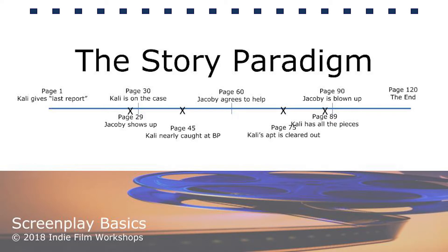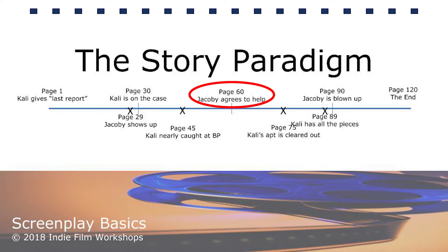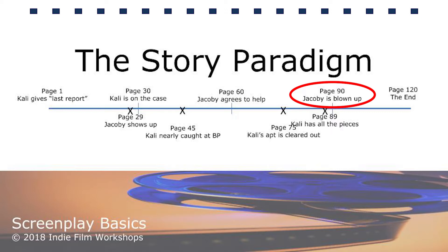What you're looking at right here in this slide is a story paradigm that I created for an actual screenplay I wrote for a project that I hope to produce one day myself. It begins on page one, where the main character, our hero Callie, appears on camera giving her final news report. On page 29, a special agent from the FBI, SSA Jacoby, shows up. On page 30, Callie realizes something is afoot — the story, by the way, is a political thriller. On page 60, special agent Jacoby realizes there is in fact something going on and decides to help Callie, or so it seems. On page 89, the second plot point, Callie feels like the puzzle is just about put together, but on page 90, Jacoby is blown up and apparently killed, throwing her whole world into a tailspin. By the end of the screenplay, on page 120, she has to solve things on her own, or so it seems. As we continue adding sentences, our story is underway.